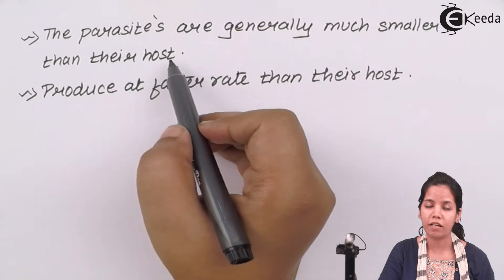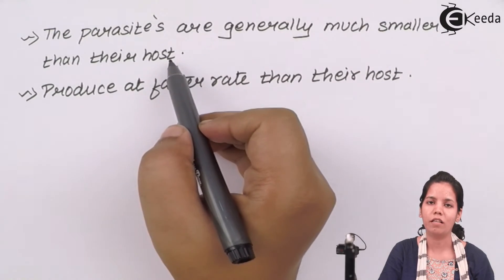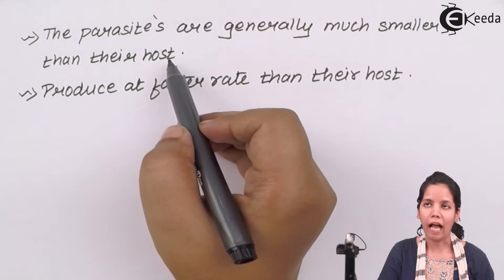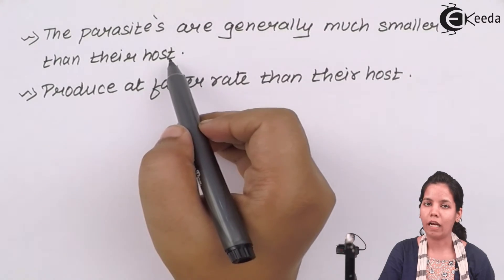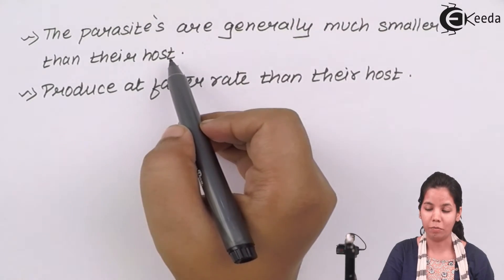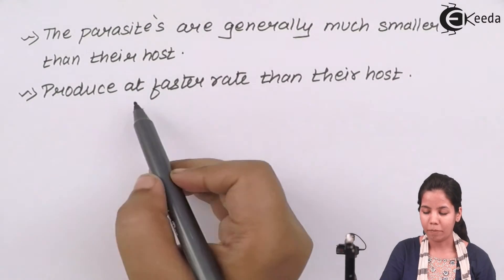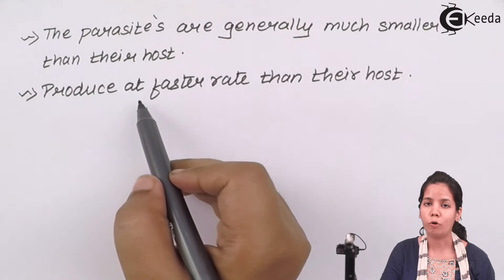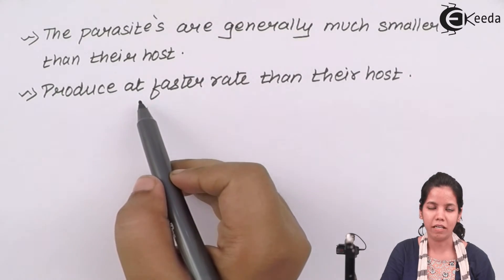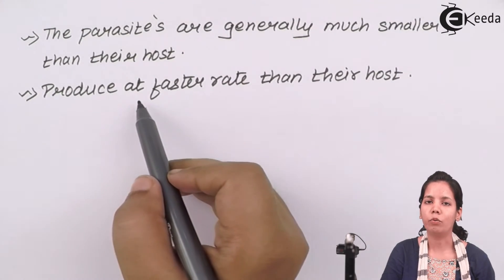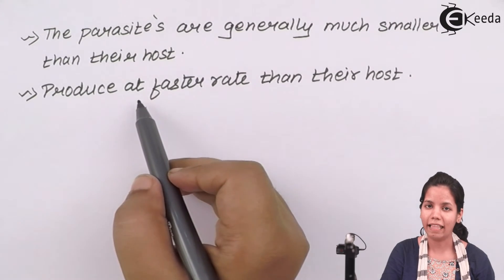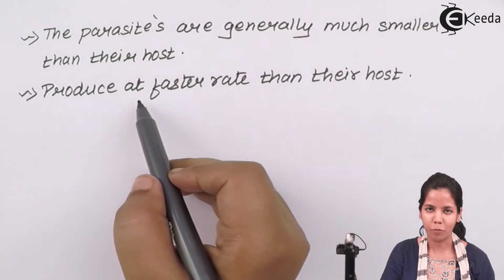Plasmodium vivax present in malaria is much smaller than human beings. Even intestinal worms are smaller than the human being. But they have the ability to multiply or reproduce at a much faster speed compared to human beings, due to which their population grows inside the host and they can cause harm.